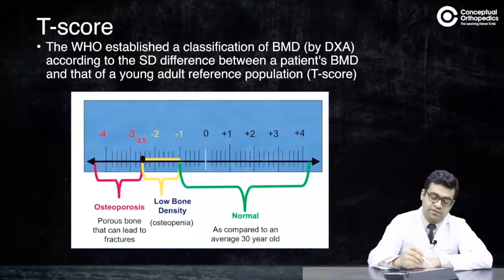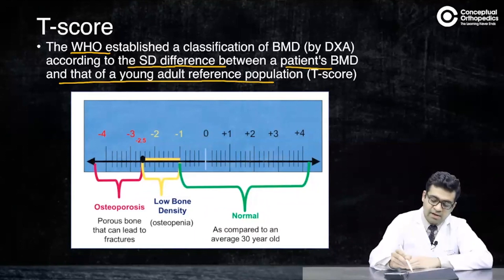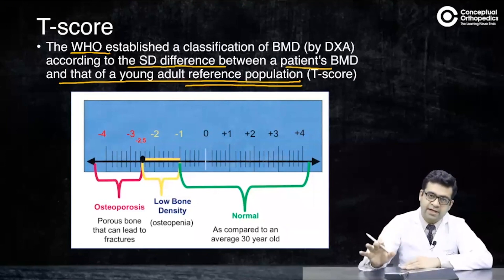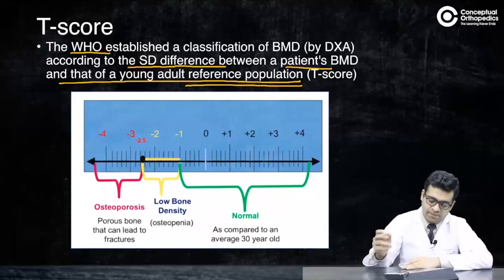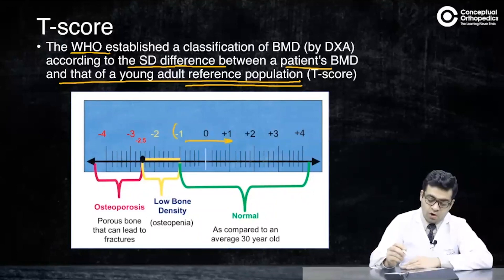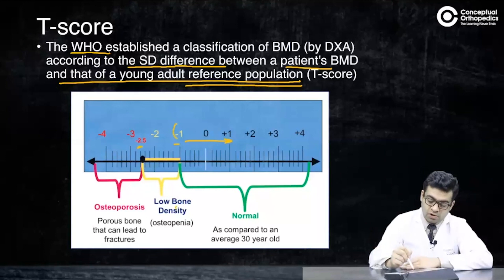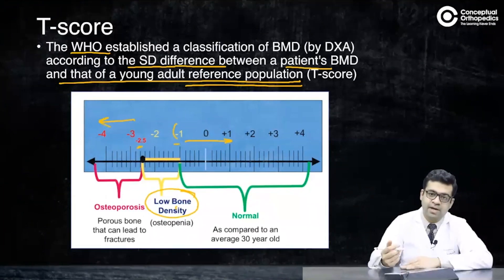The WHO classification of osteoporosis is based on the T-score value, which represents the standard deviation difference between a patient's BMD and that of a young adult reference population. Importantly, the reference population should be from the same area — you cannot compare an Asian BMD to an American or European reference. A T-score above minus 1.0 is normal; minus 1.0 to minus 2.5 is called osteopenia or low bone density; and anything more negative than minus 2.5 is classified as osteoporosis.